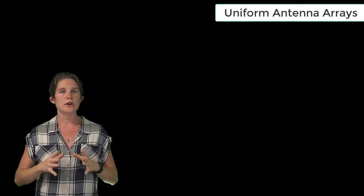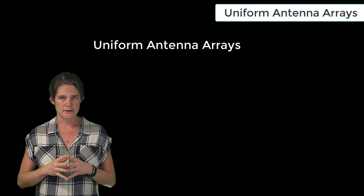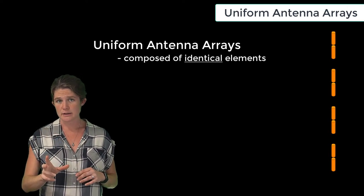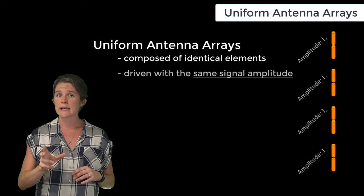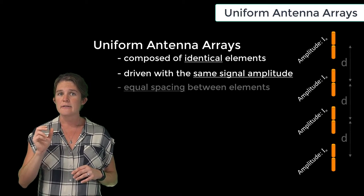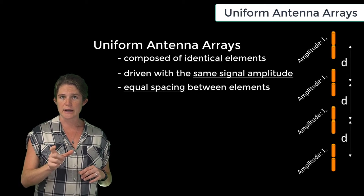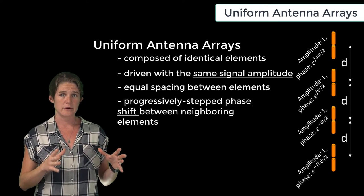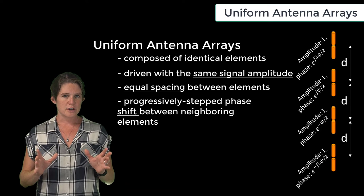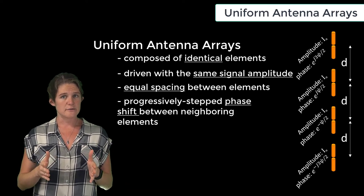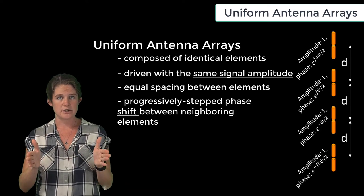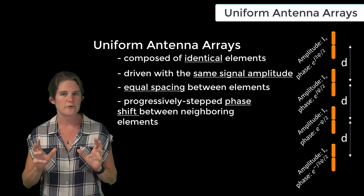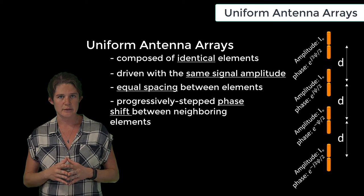Now in this module we're going to be focusing on uniform antenna arrays, which are arrays comprised of a collection of identical elements, all driven with the same signal amplitude, having equal spacing between neighboring elements, and a progressively stepped phase shift along the length of the array. This electronic phase shift augments the effective phase shift caused by the physical separation of the elements and also allows dynamic adjustment of the array factor without physical rearrangement of the antenna elements.